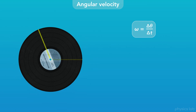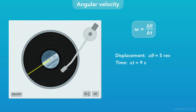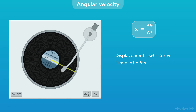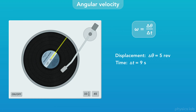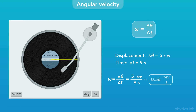Here's one more example. Let's say we're listening to this record and we want to measure its angular velocity. If we watch the line on the record and observe that it rotates 5 revolutions in 9 seconds, then the angular velocity would be the angular displacement, 5 revolutions, over the period of time, 9 seconds. That gives us 0.56 revolutions per second.